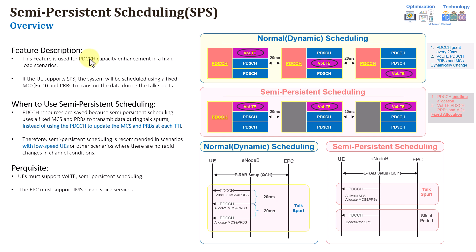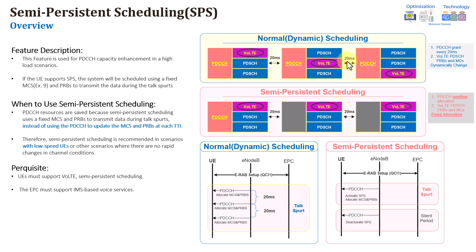The first feature we're going to start with today is semi-persistent scheduling. I believe you might be aware of this feature — it's a very simple one, which is mainly used to reduce the PDCCH congestion, to have PDCCH capacity enhancement in general, and particularly to use in high load scenarios. Let's first try to recall what was the normal scheduling in VoLTE. The VoLTE packets are being transmitted every 20 milliseconds, so the PDCCH allocation or PDCCH grant will be allocated every 20 milliseconds.